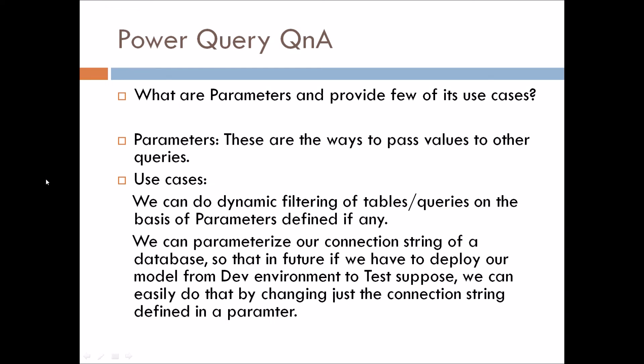What are parameters and what are a few of their use cases? Parameters are ways to pass values to other queries. Two common use cases: first, we can do dynamic filtering of tables or queries based on defined parameters — for example, dynamically filtering fact tables or dimension tables by defining and changing a parameter. Second, we can parameterize our database connection string so that in the future, when deploying our model from a dev environment to test or from test to prod, we can easily do so by just changing the connection string defined in the parameter.